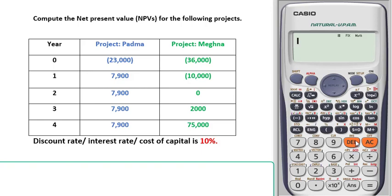Today I'll show you how we can find NPV, or net present value, of any project. We are going to find out the NPV of these two projects: Podda and Meghna. These are our cash flows, and our discount rate — or interest rate or cost of capital — is 10%. We begin with project Podda. Net present value is the difference between the present value of cash inflows and the present value of cash outflows over a period of time, and so we have to find out the present value.